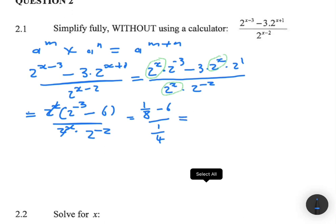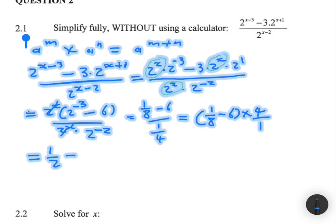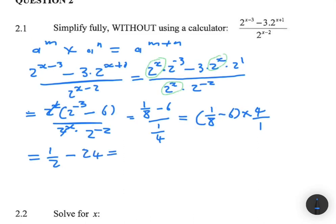We rewrite as 1 divided by 8 minus 6, multiplied by 4 divided by 1. So 1 divided by 8 multiplied by 4 is 1 divided by 2, and then minus 6 multiplied by 4 is 24. That gives us 1 divided by 2 minus 24, which equals minus 23.5, or in fraction form, minus 47 divided by 2. That's how we solve problem 2.1.